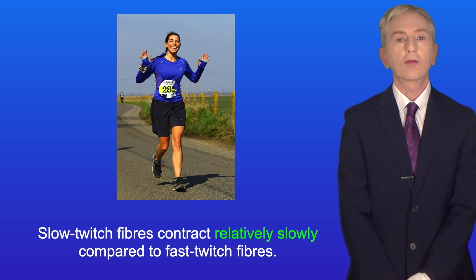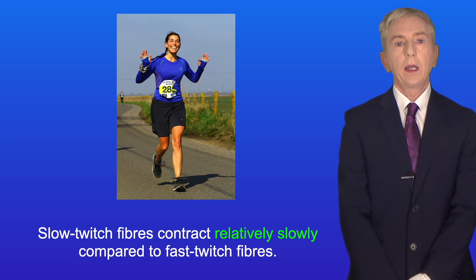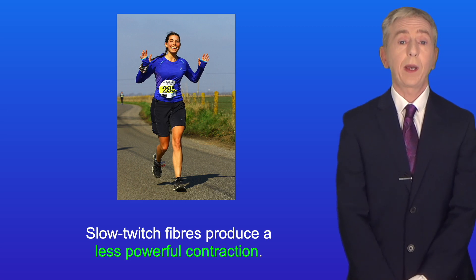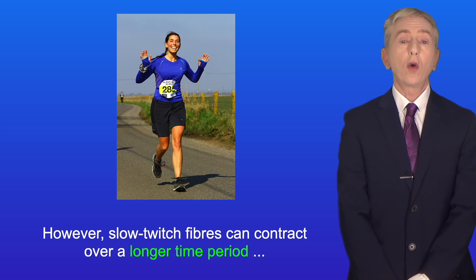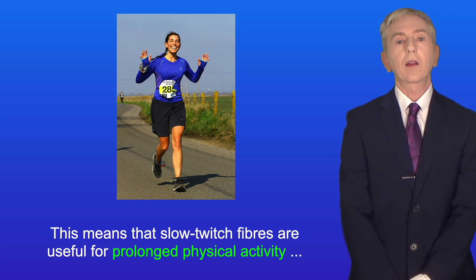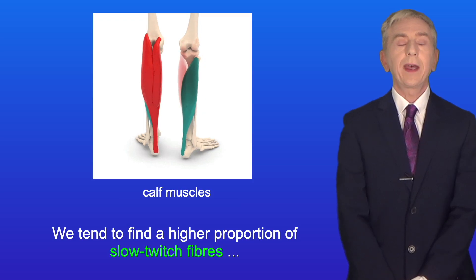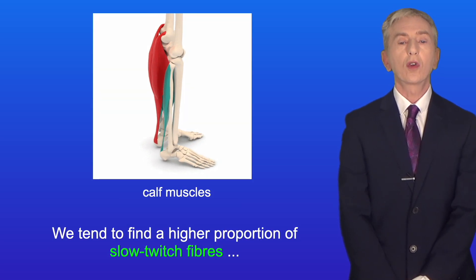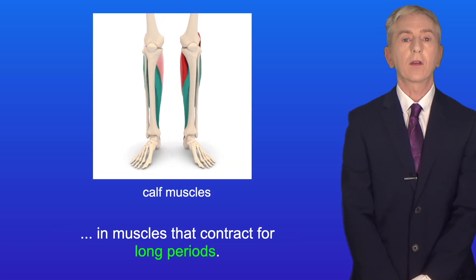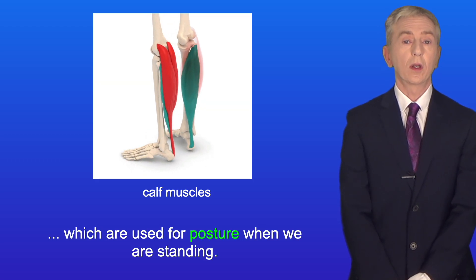Slow twitch fibers contract relatively slowly and produce a less powerful contraction compared to fast twitch fibers. However, slow twitch fibers can contract over a longer time period, making them useful for prolonged physical activity, for example, running a long distance. We tend to find a higher proportion of slow twitch fibers in muscles that contract for long periods, such as the calf muscles in the legs, which are used for posture when standing.